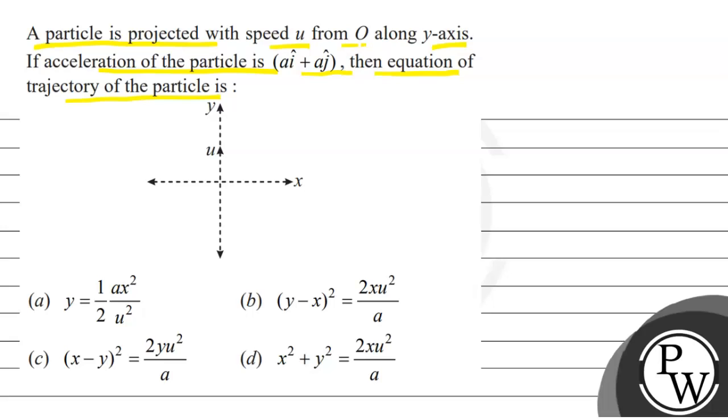Options are: (a) y equals half ax square upon u square, (b) y minus x square equals 2x u square upon a, (c) x minus y square equals 2y u square upon a, (d) x square plus y square equals 2x u square upon a square. We have to choose the correct option.